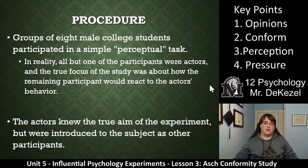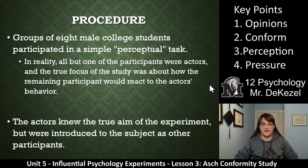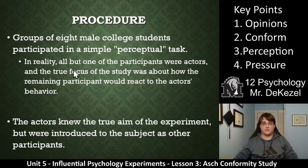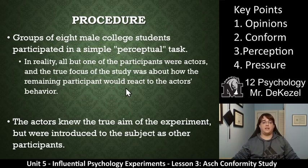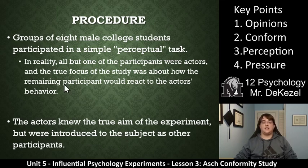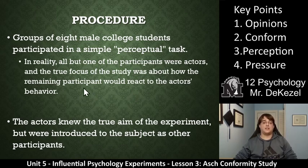So this is what the experiment was. Essentially, there was a group of eight male college students that participated in a simple perceptual task — essentially just seeing how long some lines were, their perception of the length of the lines. In reality, all but one of the participants were actors. So there were seven actors and one actual participant. The true focus of the study was about how the remaining participant would react to the actors' overall behaviors. The actors knew the true aim of the experiment and were introduced just the same as the participant so that the participant did not know.